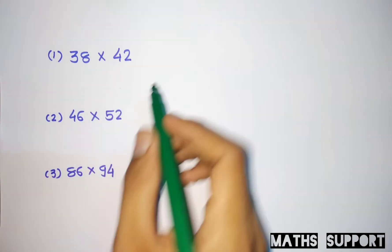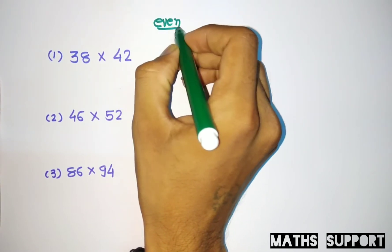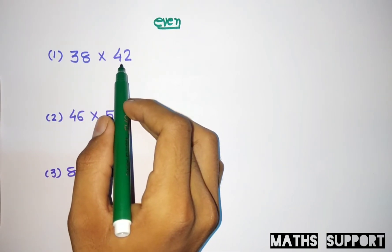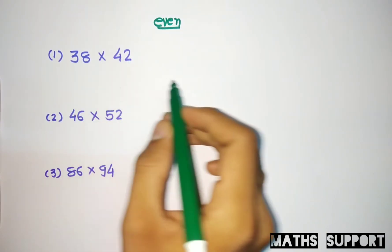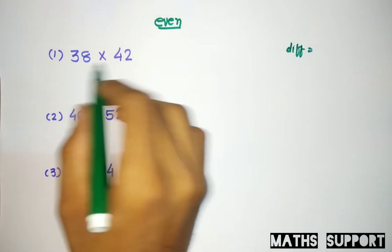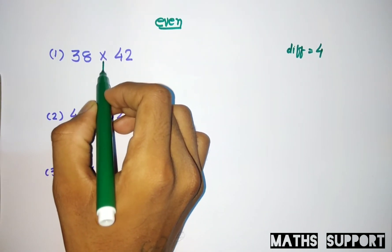For the first example, you can find the difference of two numbers is 4. From this we can find the middle number between these two. The middle number will be 40. So from this I can write this number as 40 minus 2 and 40 plus 2.